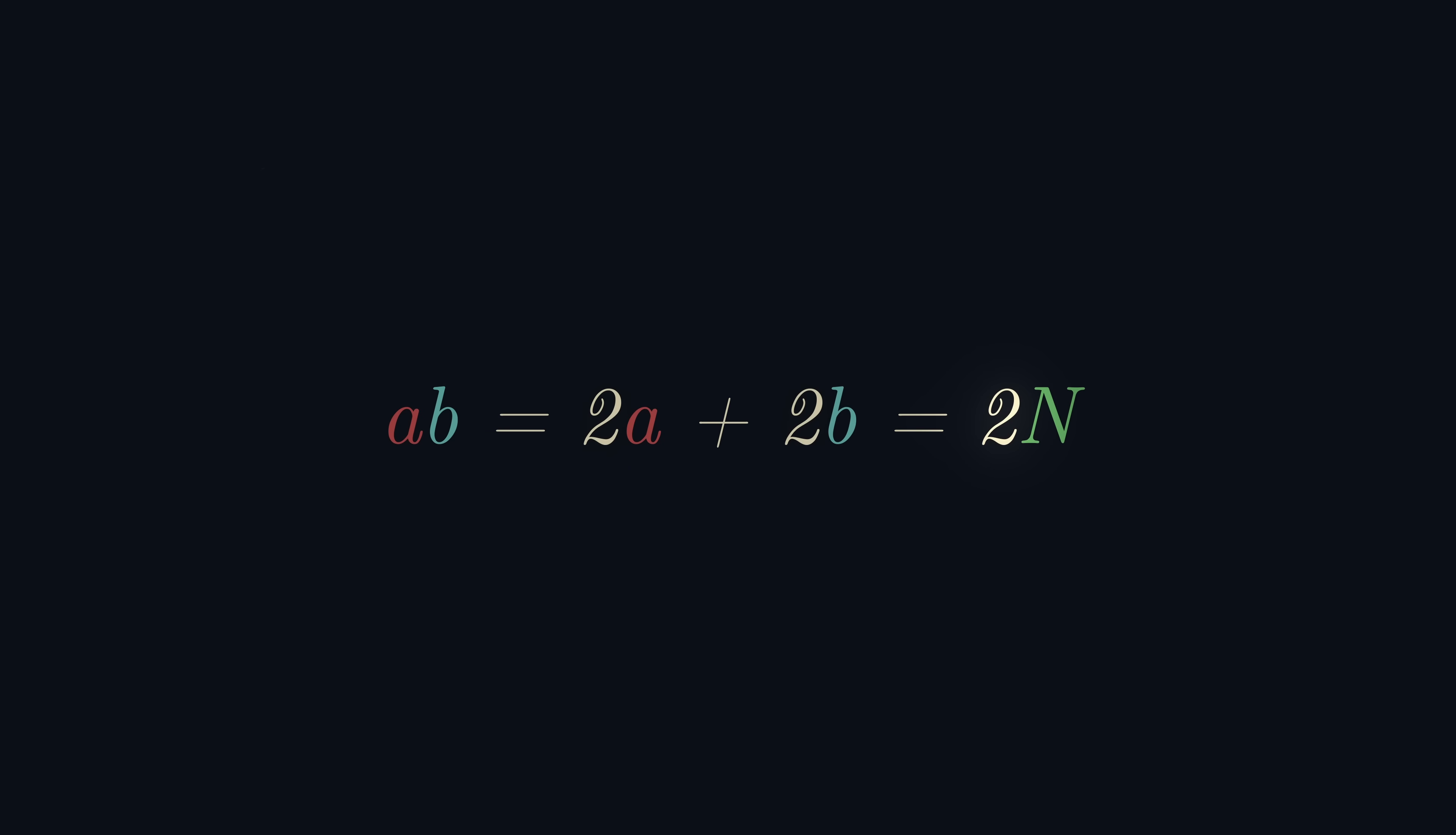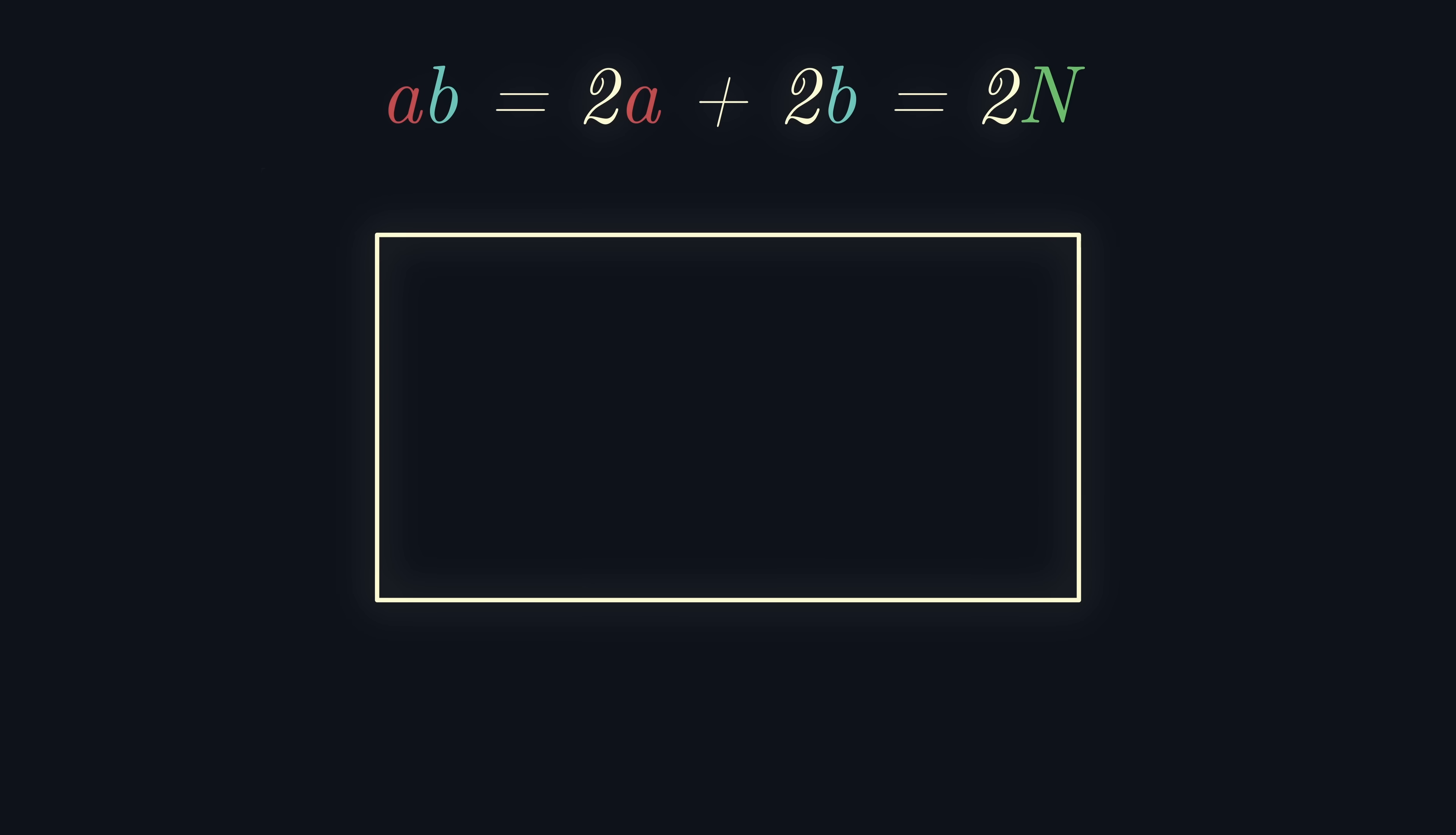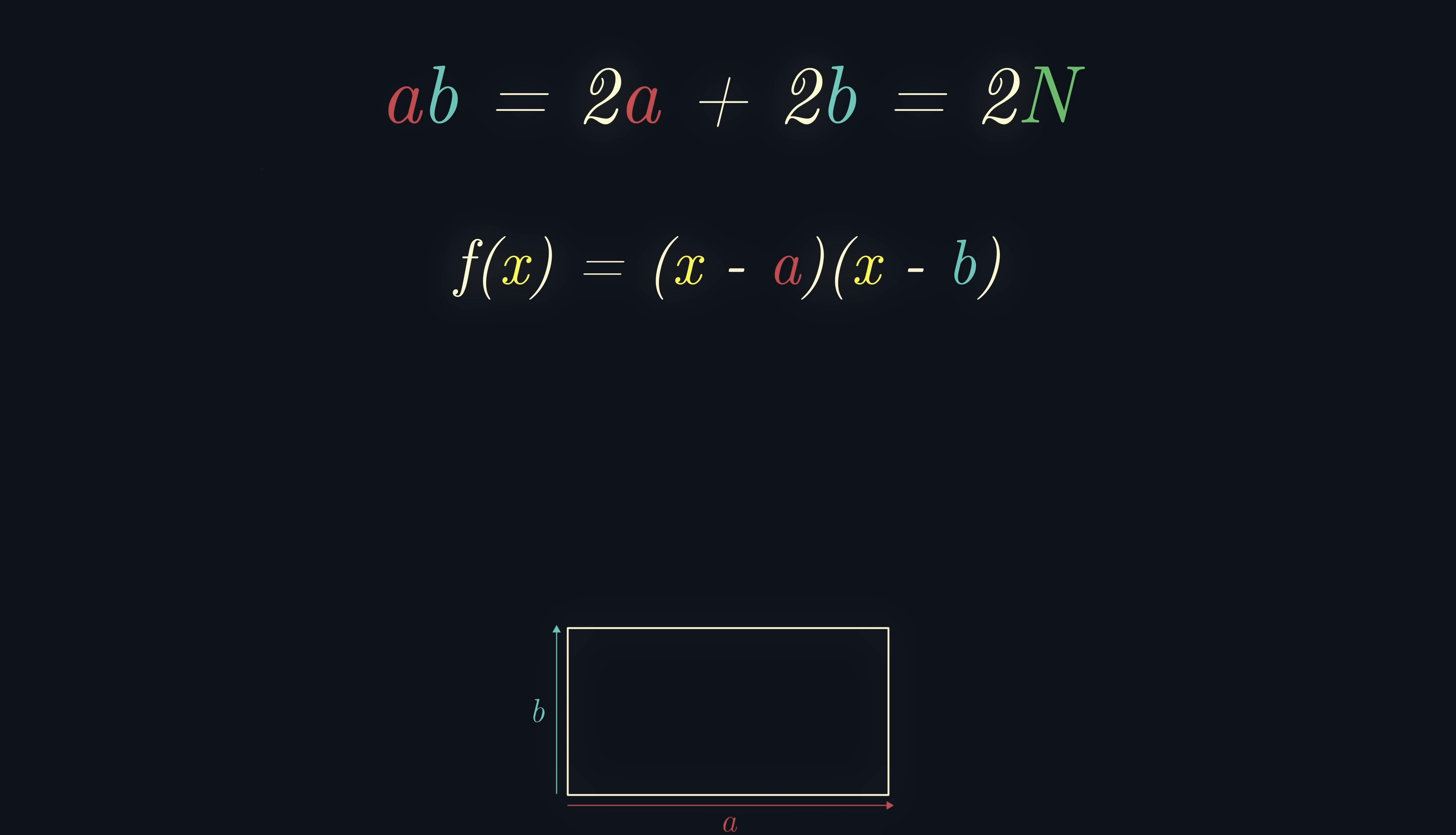Now, this is the magic trick. Consider letting the side lengths of our rectangle be the roots of some quadratic polynomial f of x. Hence, we know that f of x equals x minus a multiplied by x minus b, which equals x squared minus (a plus b)x plus ab.